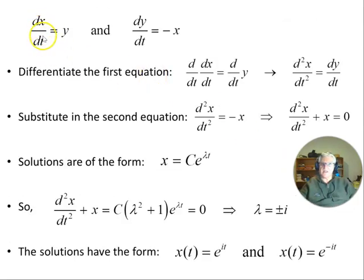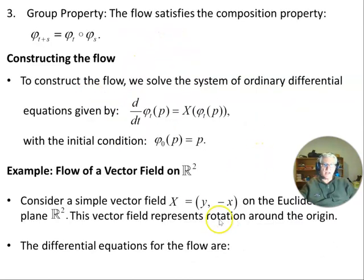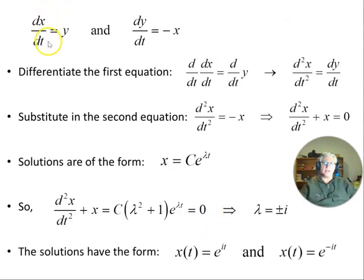The equations are dx/dt is y and dy/dt is minus x. Can I just say here, dx/dt is y and dy/dt is minus x. That's how that came about. Remember, this is the x component, this is the y component of your vector field. So dx/dt is y, dy/dt is minus x.